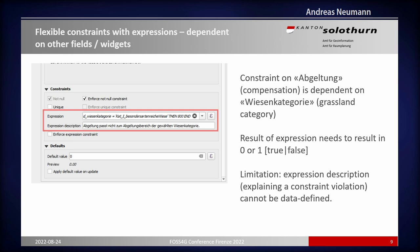Constraints are basically an expression that always returns true or false — whether the constraint is met or not. You can have a description to show as an error message if the constraint is not passed. The constraint can be data-defined with an expression, but the error message cannot yet. That's a limitation — if you have a flexible constraint, you'd also want flexible error messages, so that could hopefully be added later.